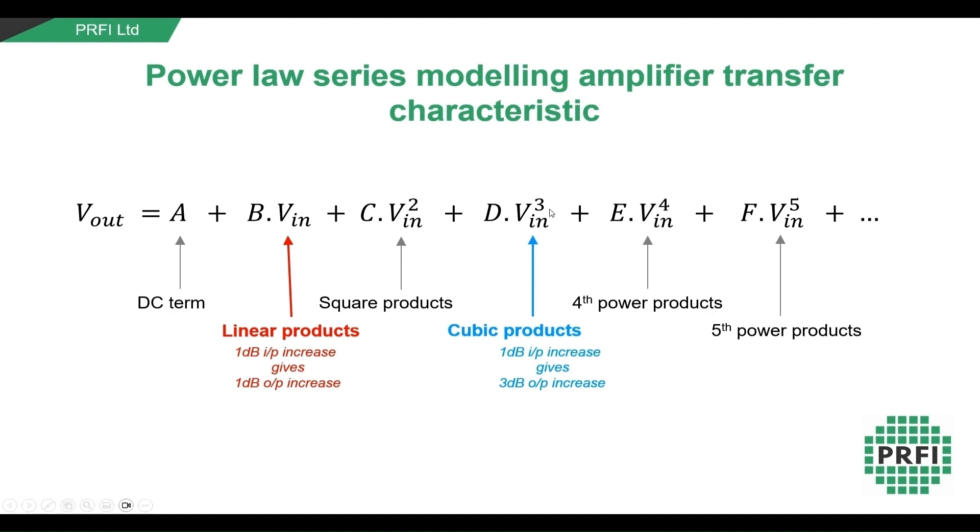The cubic term is often of most interest. Distortion caused by this term can generate interference products that are very close in frequency to the RF channel, something that is undesirable in RF systems. Measuring how these products vary with input level allows us to determine the circuit's third order intercept point, IP3, a figure of merit for third order distortion.